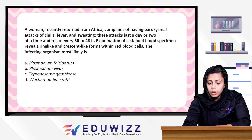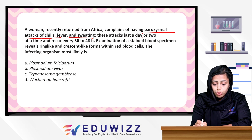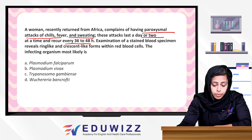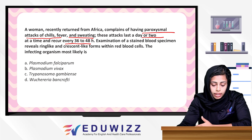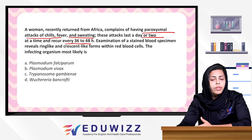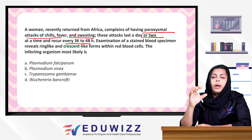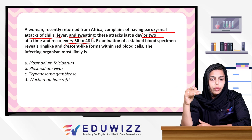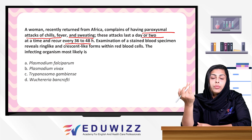Next question: A woman recently returned from Africa complaining of paroxysmal attacks of chills, fever, and sweating. These attacks last a day or two with recovery every 36 to 48 hours. Examination of a stained blood specimen reveals ring-like and crescent-like forms within the red cells. If we check the blood, we can see ring-like forms and crescent-like forms.